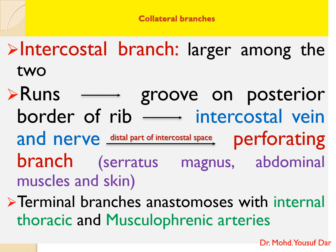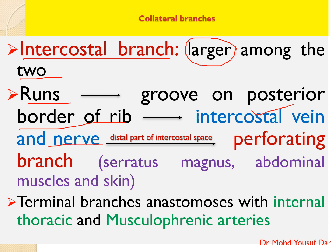The intercostal branch is the larger of the two branches. It runs through the groove on the posterior border of the rib, along with the intercostal vein and intercostal nerve. On reaching the distal part of the intercostal space, it gives off a perforating branch, which supplies the serratus magnus, abdominal muscles, and skin.